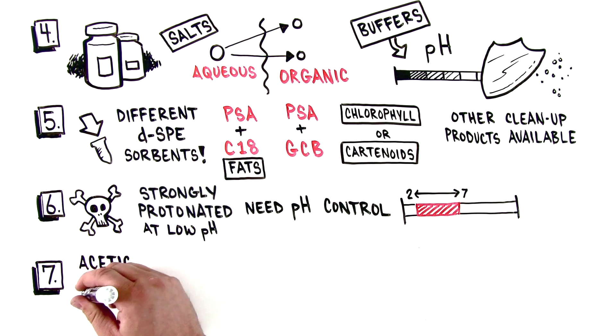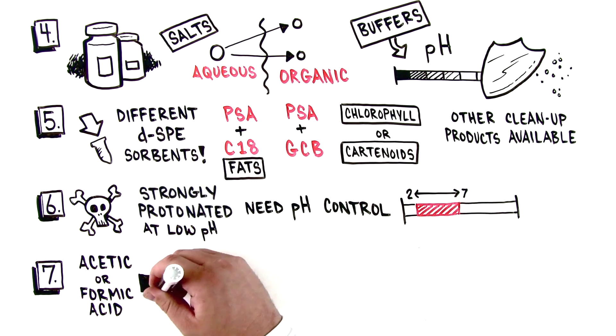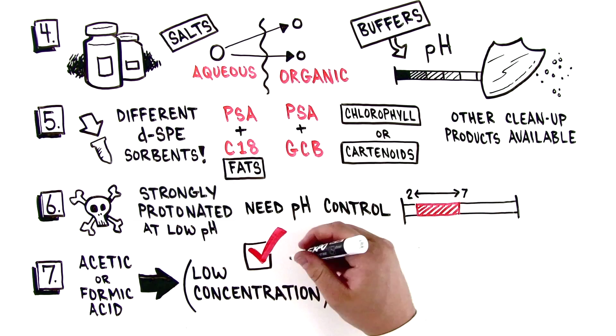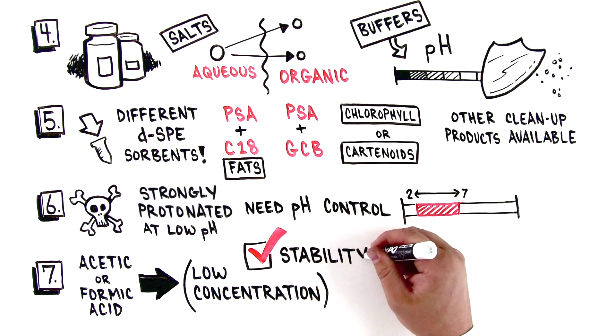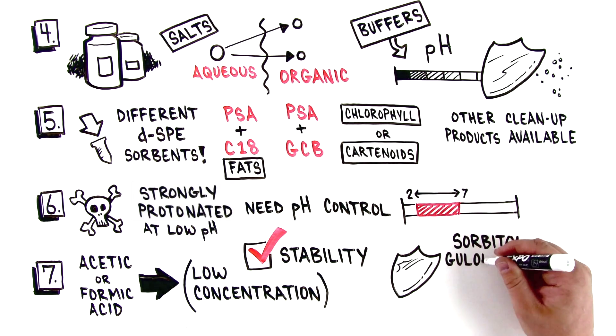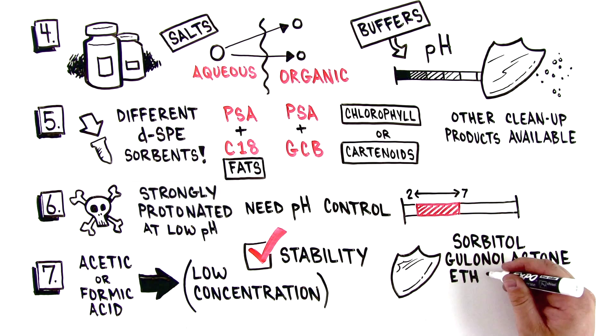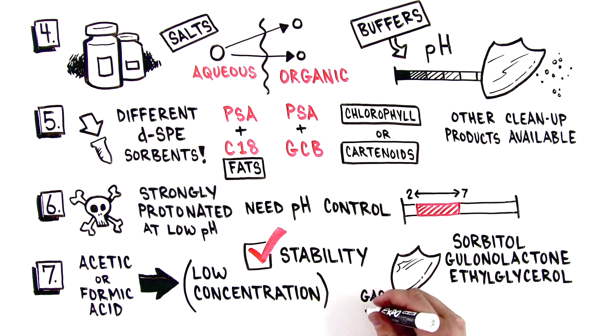Number seven, after sample preparation, acetic or formic acid can be added at low concentrations to ensure stability of base-sensitive pesticides. Analyte protectants like sorbitol, gulanolactone, or ethyl glycerol are sometimes added prior to analysis by gas chromatographic techniques.